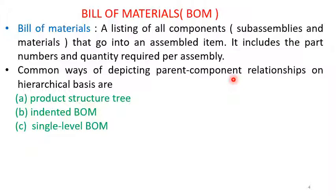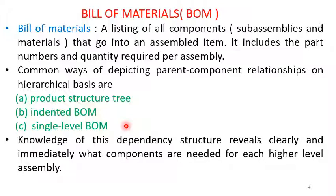So there are three different ways of representing the relationship between the parent item and the components: the product structure tree, the indented Bill of Materials, and the single-level Bill of Materials. Knowledge of this dependency structure reveals clearly and immediately what components are needed for each higher-level assembly.